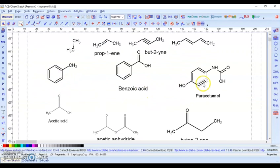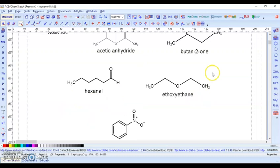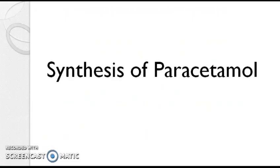So we have drawn basic chain structures, then toluene, benzoic acid, paracetamol, acetic acid, acetic anhydride, ketone structure, aldehyde structure, ether structure, and nitro compounds. Next, we will see how to draw a chemical reaction using ChemSketch software — specifically the synthesis of paracetamol.